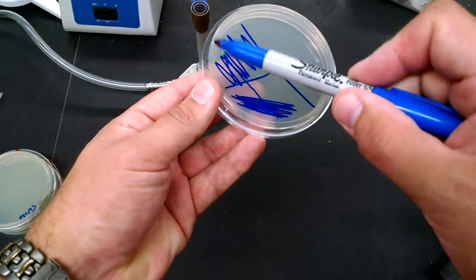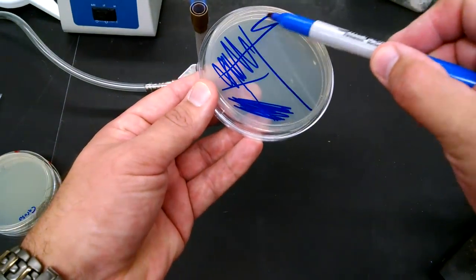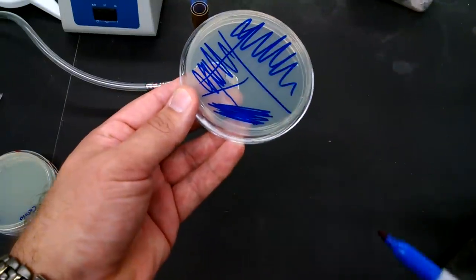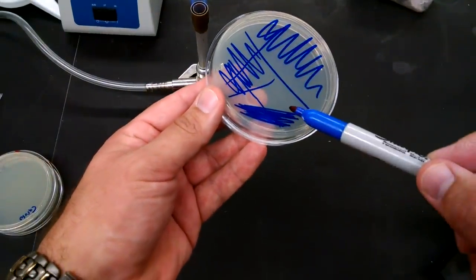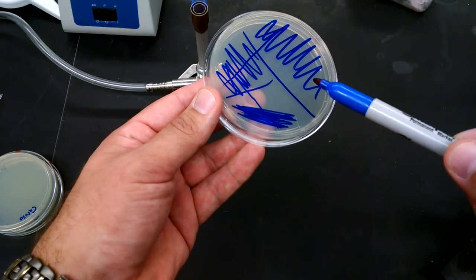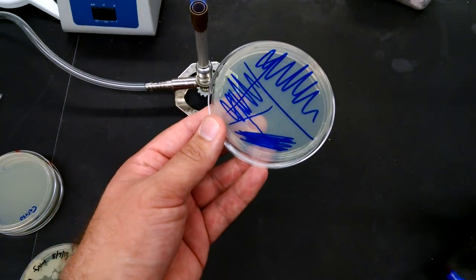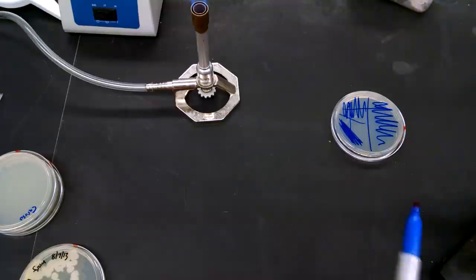Then you're going to do the same thing. You're going to drag through here one time and then spread it out. And so what we've done is we've diluted the sample on the plate. Very simple, right? And so let's see what that looks like in real life.